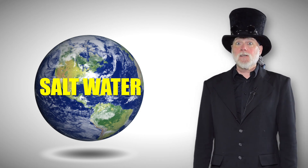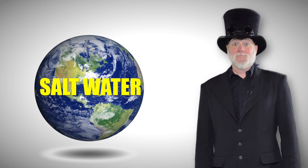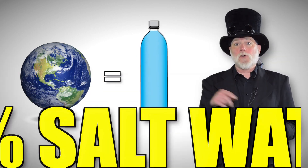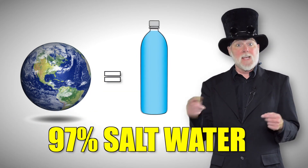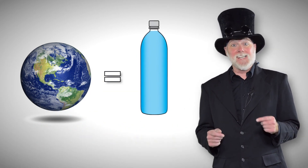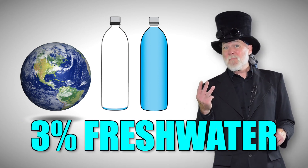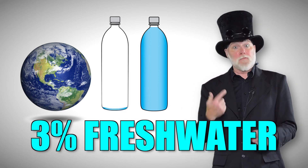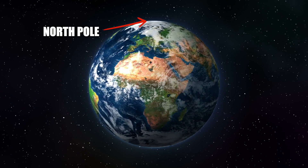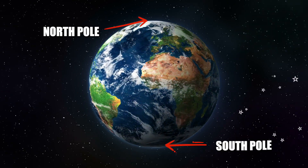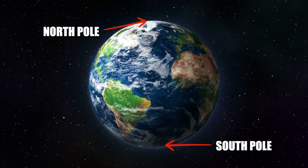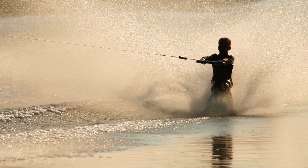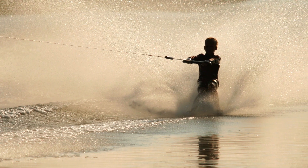Humans cannot drink salt water — and this is tricky because 97 percent of the water on the planet is salt water in oceans and seas. That leaves only 3 percent of the Earth's water as fresh water for us to use, and the vast majority of that fresh water is frozen at the poles of the Earth.